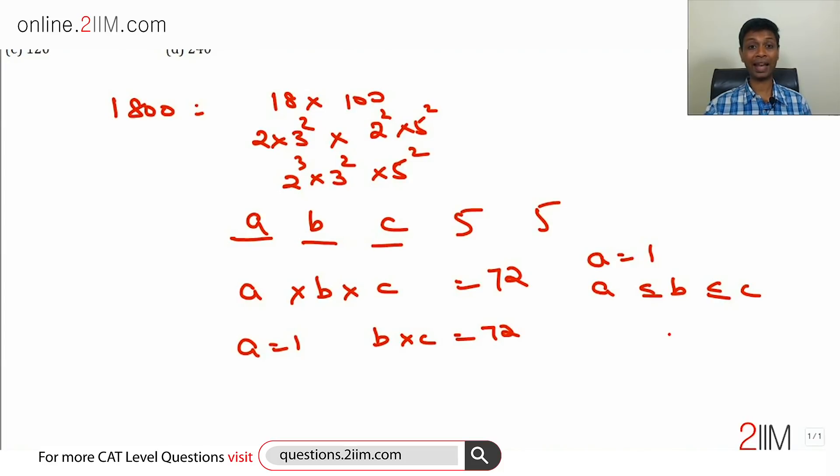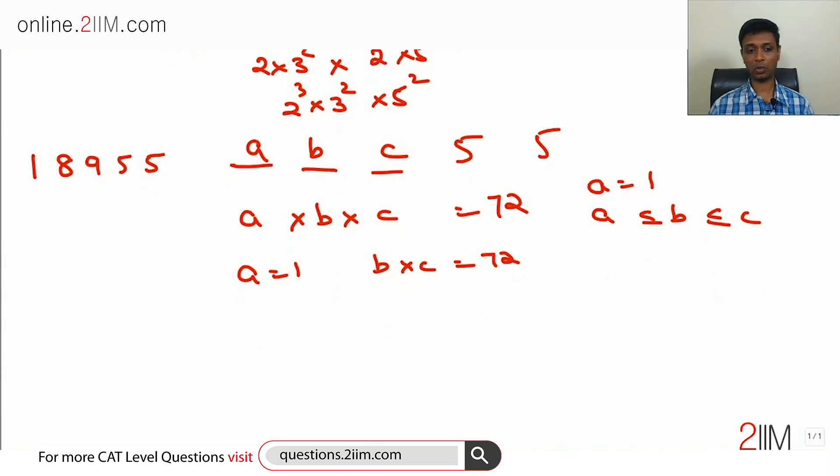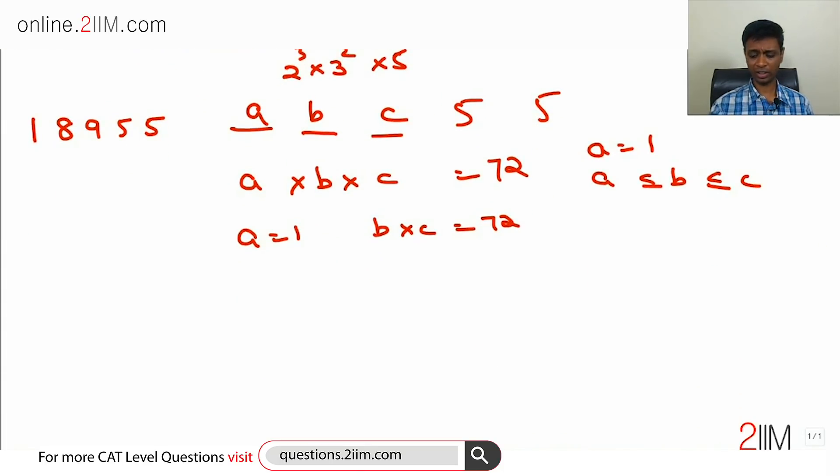B and C can be 8 and 9. They cannot be anything else because if I have 6 times 12, it becomes a 2-digit number. B and C have to be single digits. So with A as 1, B times C being 72 is only one possibility: 8 times 9. The digits can be 1, 8, 9, 5, 5. Let's go to the next category. With A equal to 1, there is only one possibility for B and C.